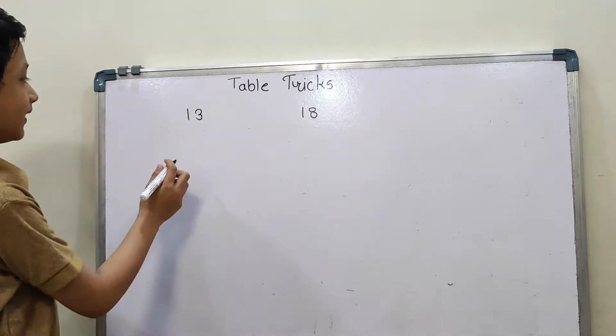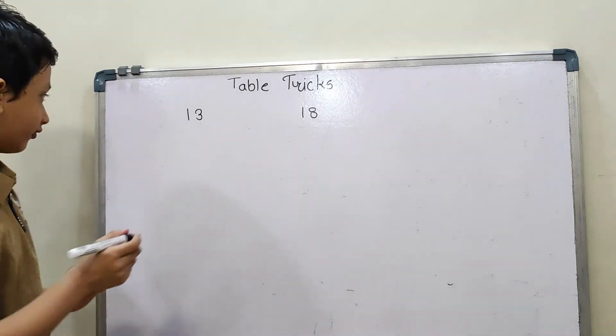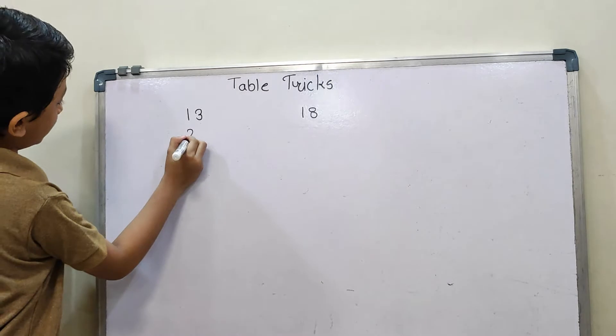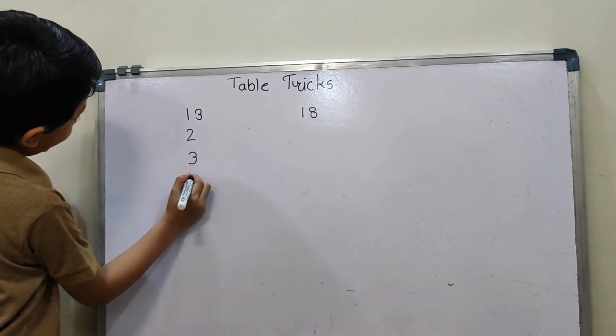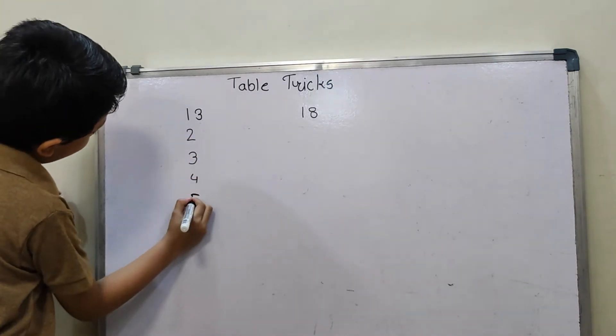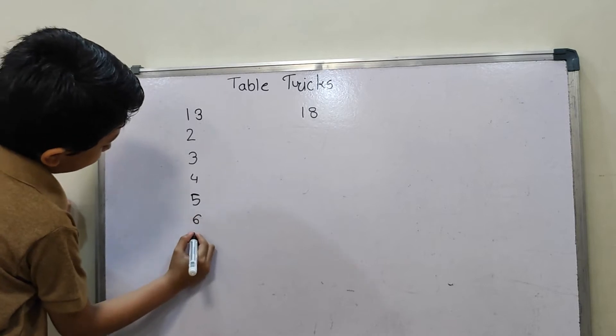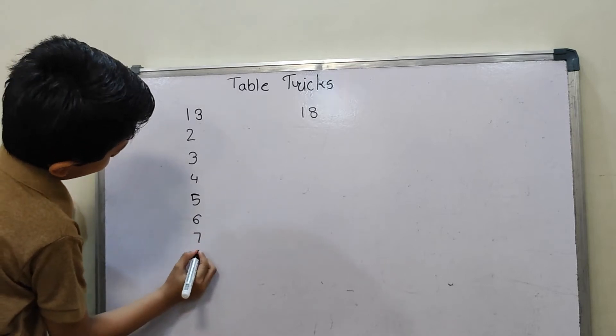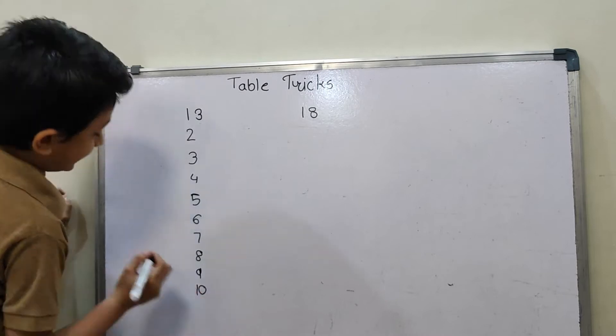When I'm looking at one table, it means counting. So 1, 2, 3, 4, 5, 6, 7, 8, 9, and 10.